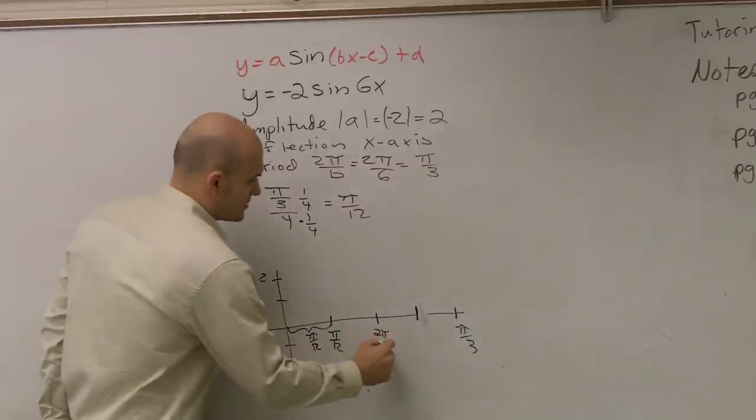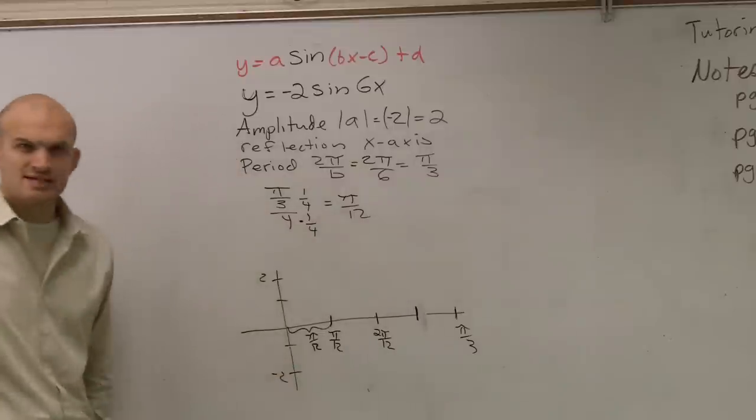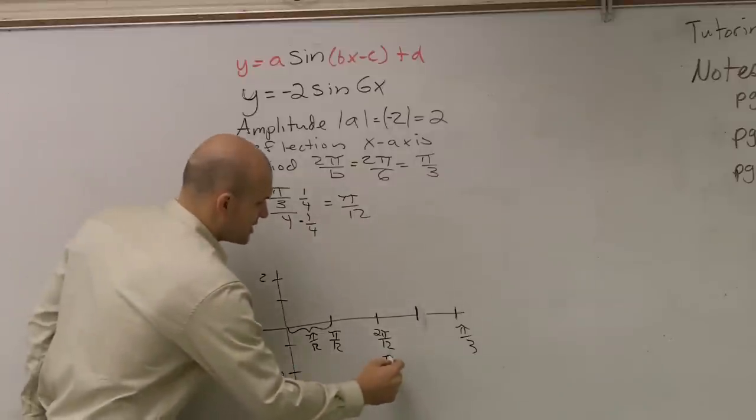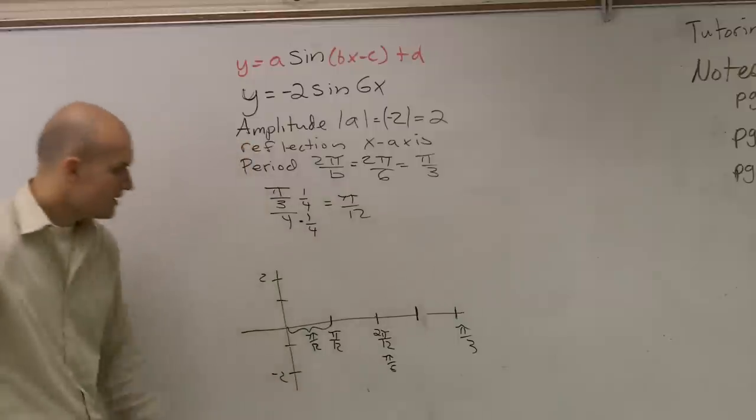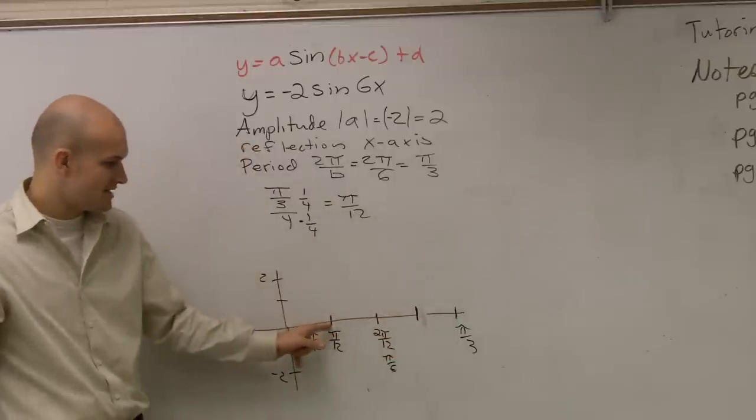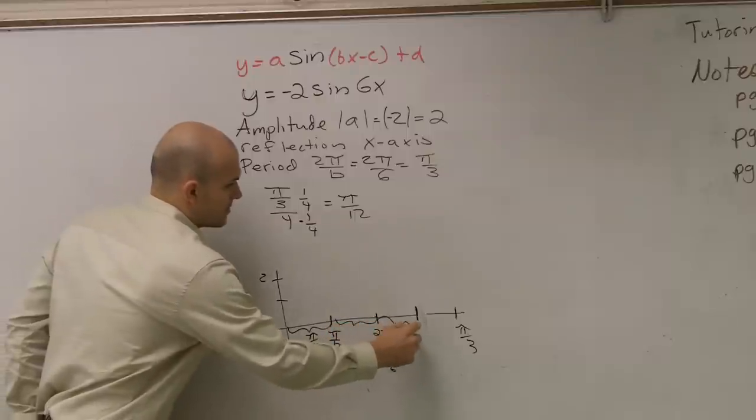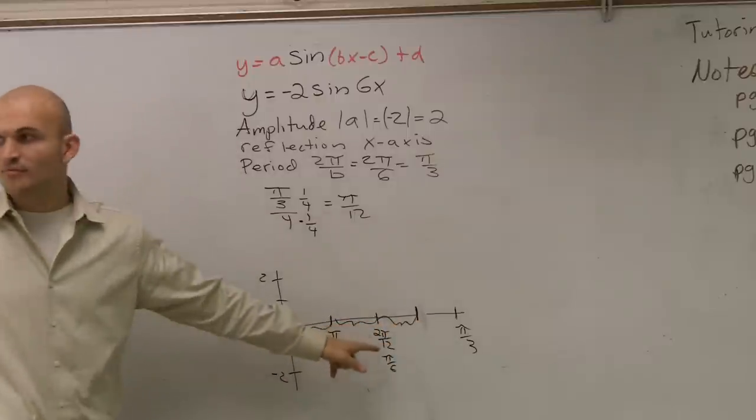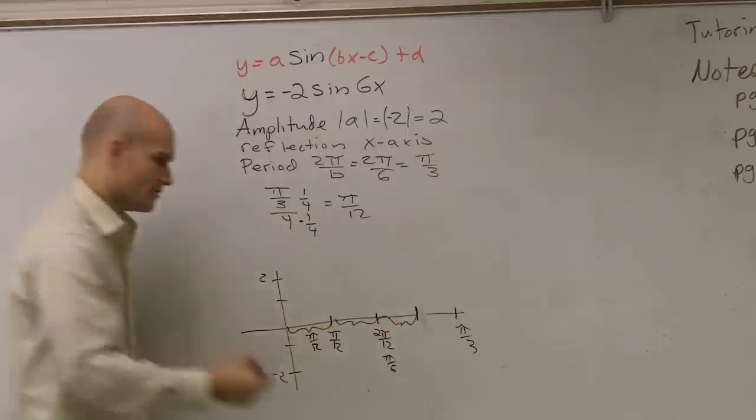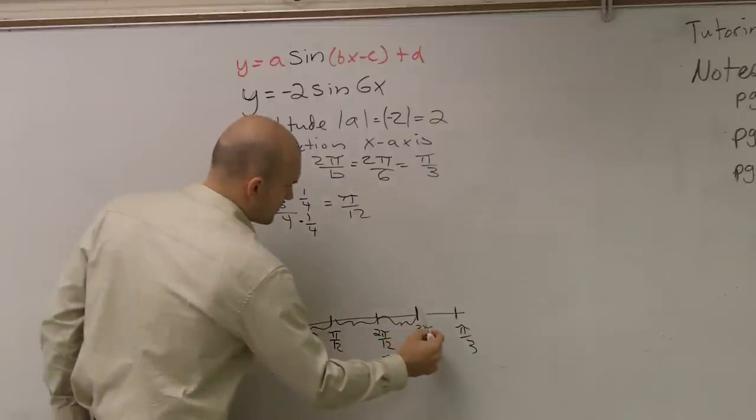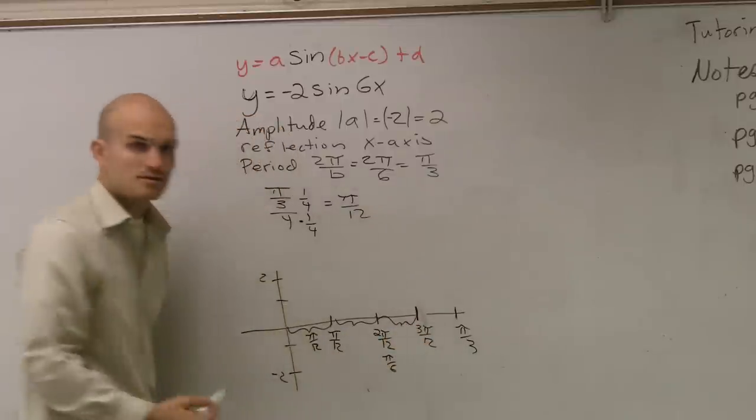So, the next point is 2 pi over 12, which is actually what? Pi over 6, right? Then, to get to the next point, again, the same distance. It's also pi over 12 again. So, pi over 12 plus 2 pi over 12 is 3 pi over 6, which is pi over 4.